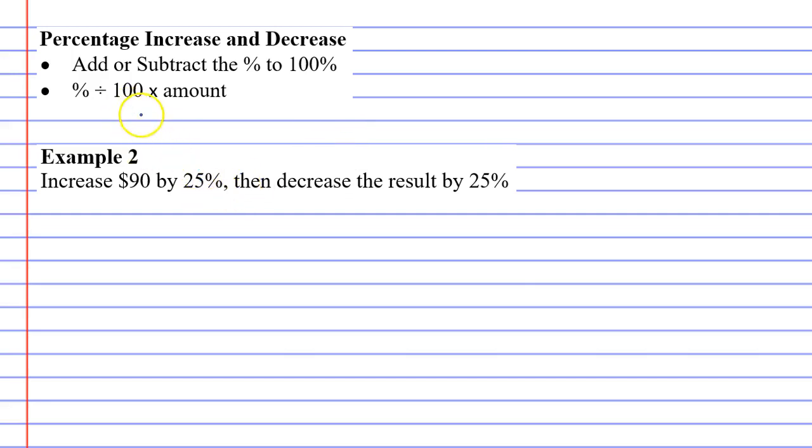So what we'll do is we'll do it using this method. If you think about it, if I increase by 25%, that means you go 100% plus 25%, which gives you 125%.